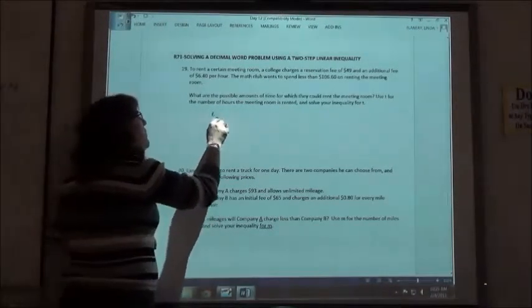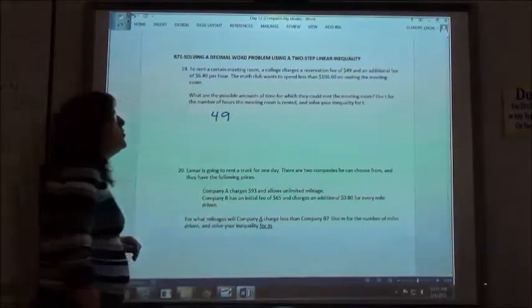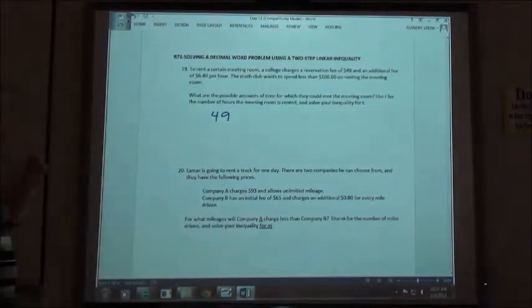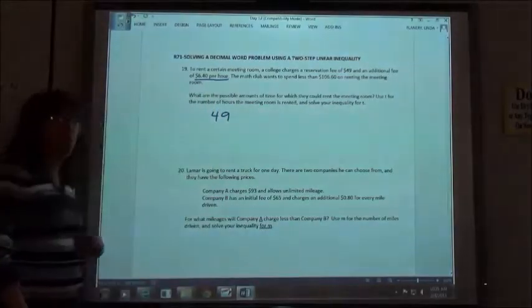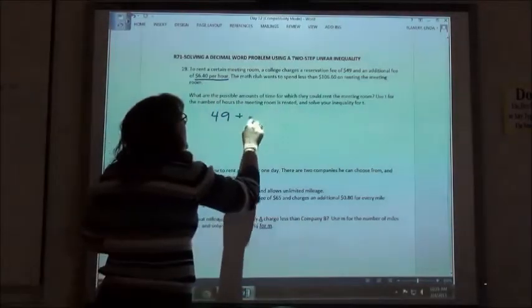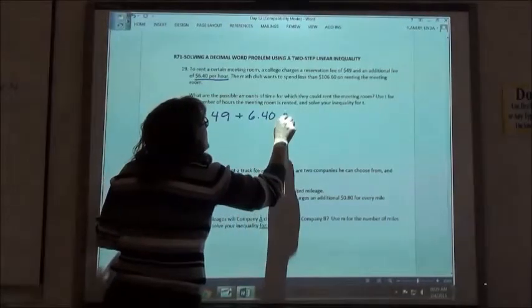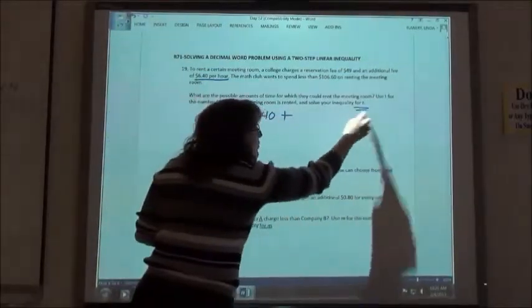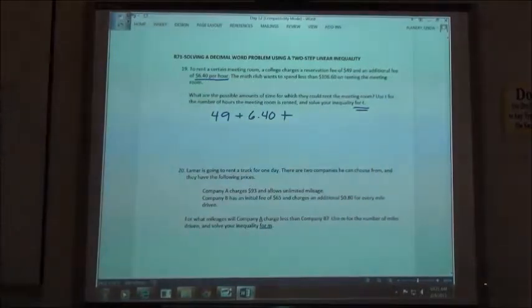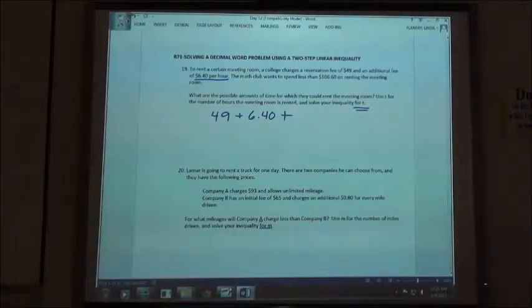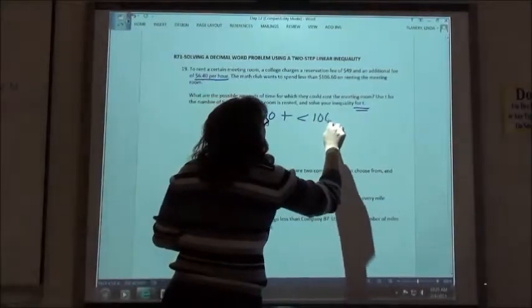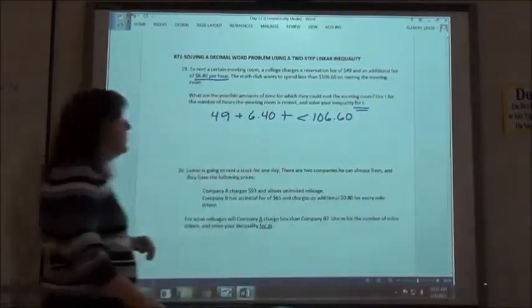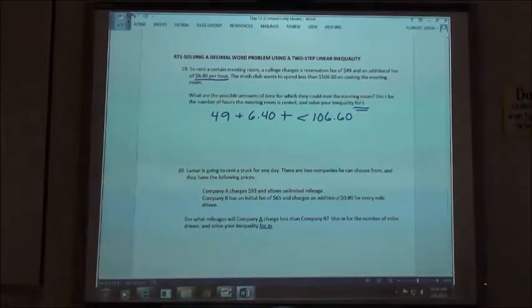Use T for the number of hours. So, I paid $49 to reserve the room, I'm going to pay an additional fee of $6.40 per hour. So I'm going to have $6.40T, since it told me I had to use T for the number of hours. I want to spend less than $106.60.